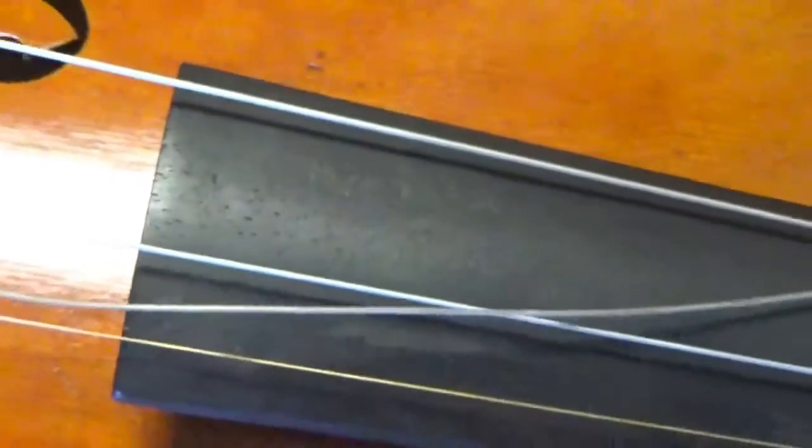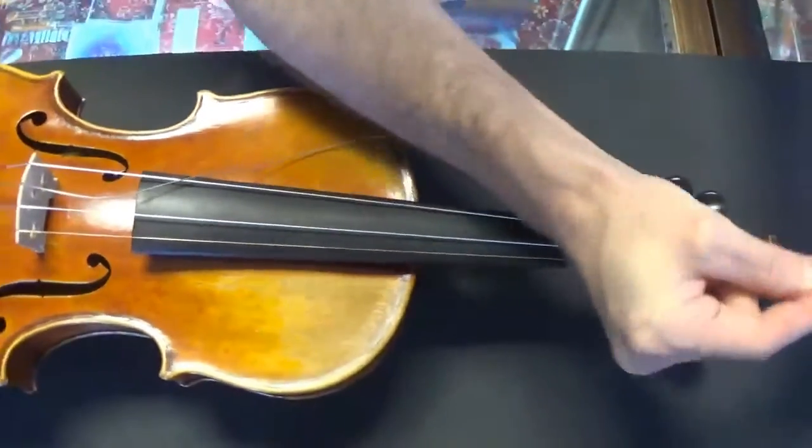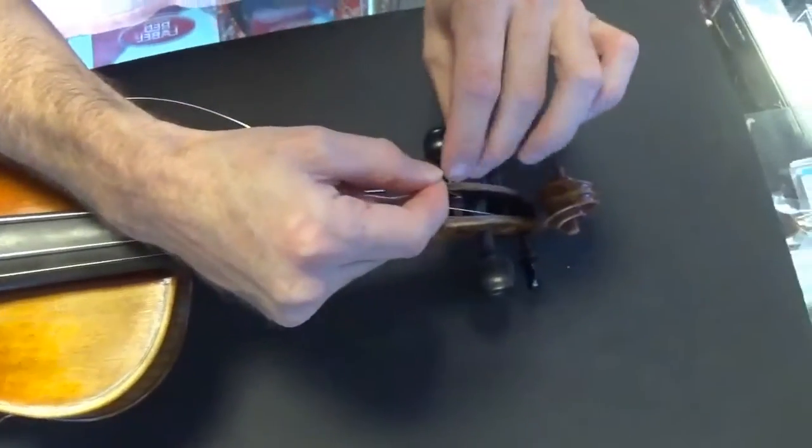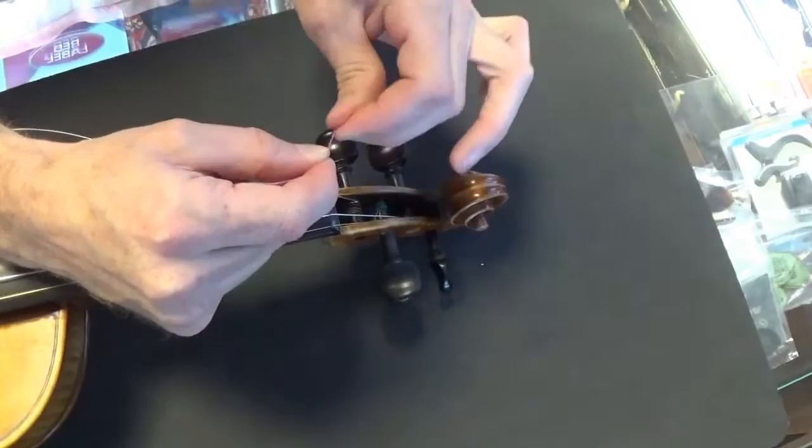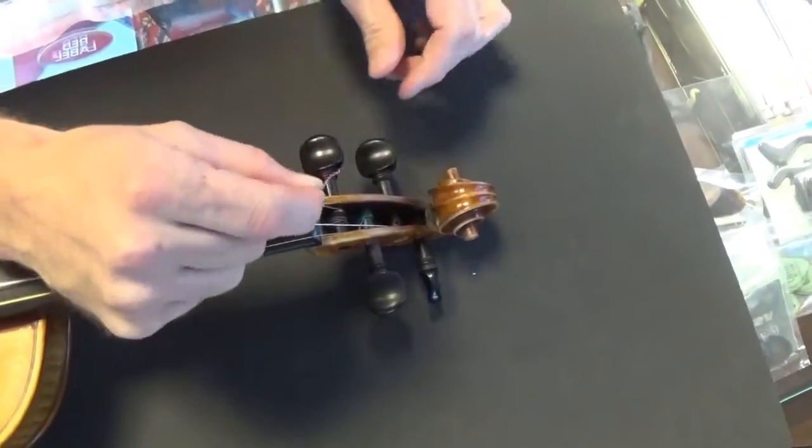This string is one I've already used before. The way I want to show you how to put a string on is by wrapping it back around itself so that the string itself does not slip.